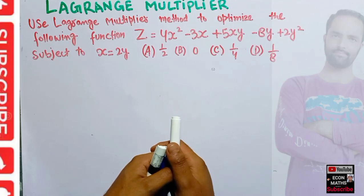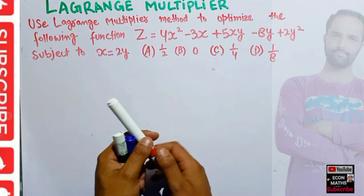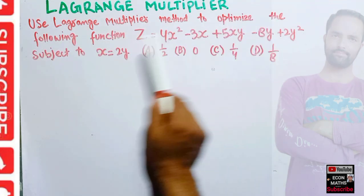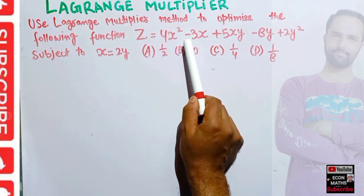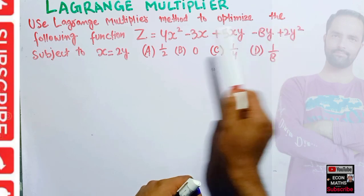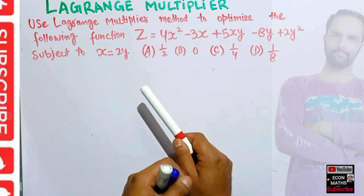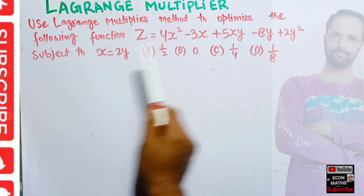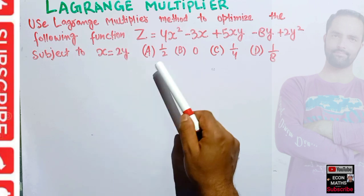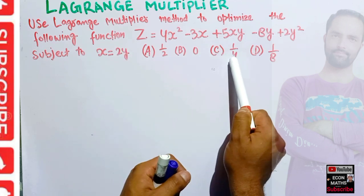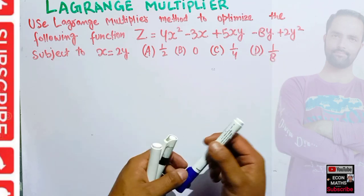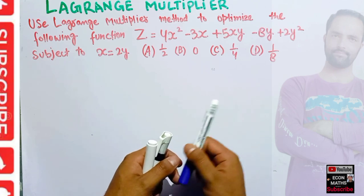In this video we will learn about the Lagrange multiplier method of optimization. The question is: use the Lagrange multiplier method to optimize the function z = 4x² - 3x + 5xy - 8y + 2y², subject to the constraint x = 2y. The options given are 1/2, 0, 1/4, and 1/8. We need to find which option is correct when we find the optimal values of x and y and plug them into our function.